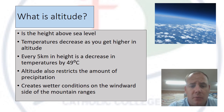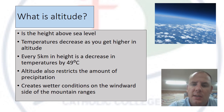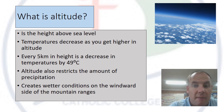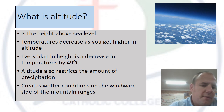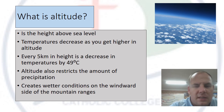At sea level, altitude is zero, and we measure upward in meters. As we go up, temperatures decrease because the atmosphere gets thinner and colder. Every five kilometers in height decreases temperatures by about 49 degrees Celsius — that's just under 10 degrees per kilometer. These are called lapse rates.